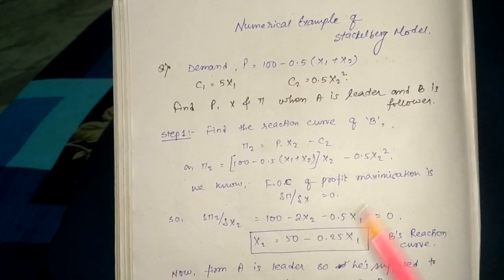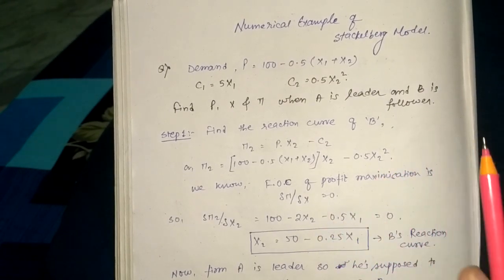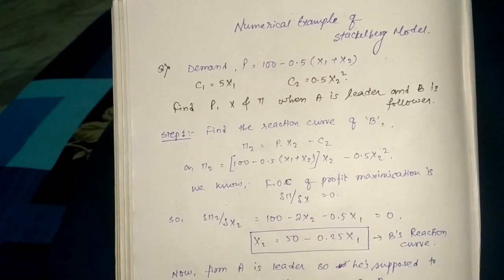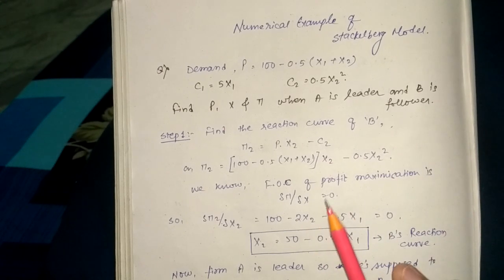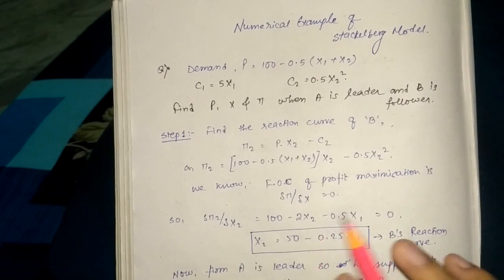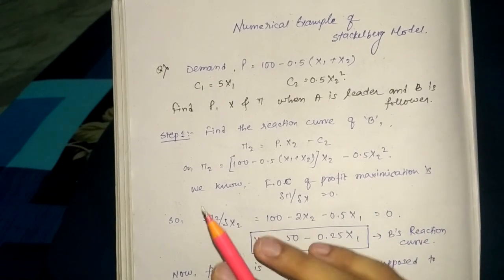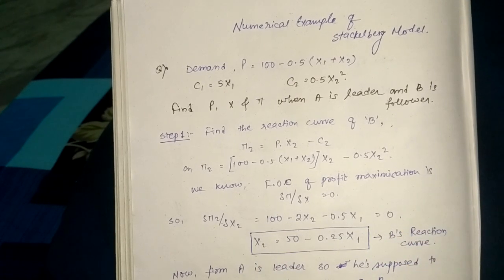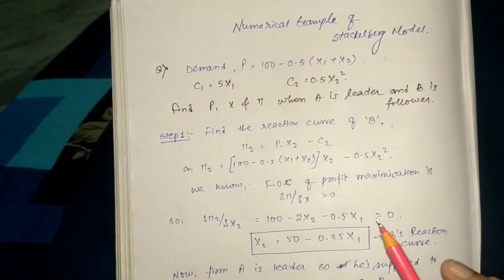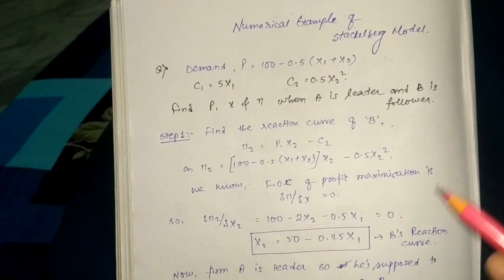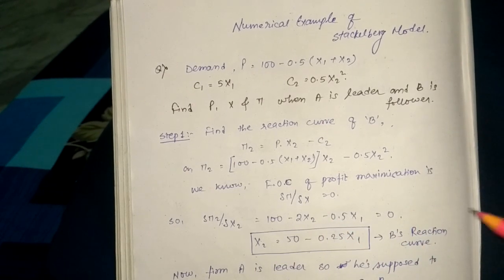Hey guys, in today's video I'm going to discuss a numerical example of the Stackelberg model. In my previous video I discussed the Stackelberg model graphically, so now I'm going to discuss it numerically. The objective is to show that when firm A wants to be leader and firm B wants to be follower in a duopoly market, the outcome is that the firm's output as well as profit should be greater than firm B's, which is the follower.